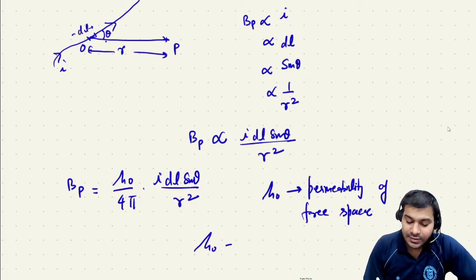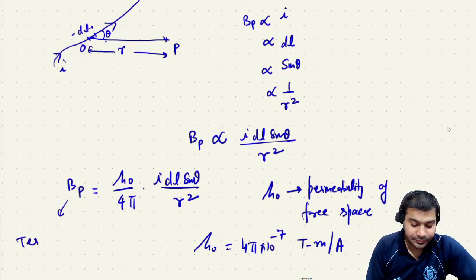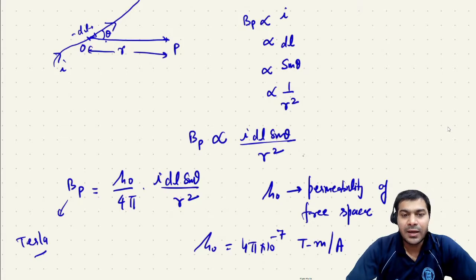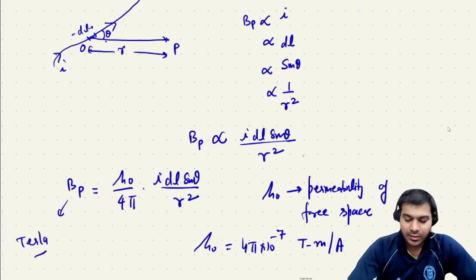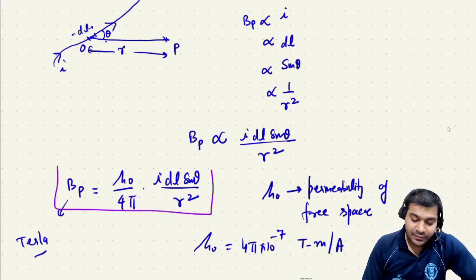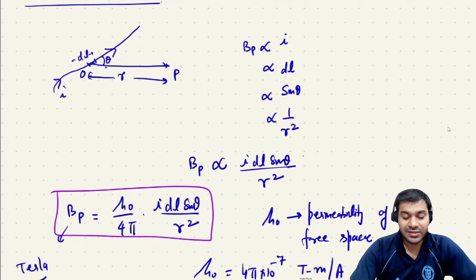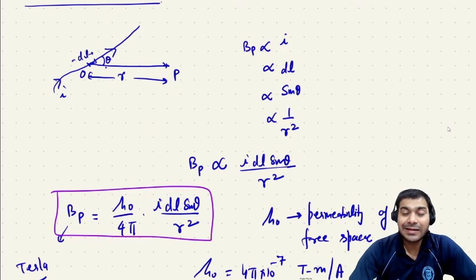The value of μ₀ is 4π × 10⁻⁷ Tesla·meter per ampere in SI units. If you represent the magnetic field in Tesla, then μ₀ will have the unit Tesla·meter per ampere. This is a very powerful law by Biot-Savart which tells you the magnitude of the magnetic field created at any point near a current carrying wire.